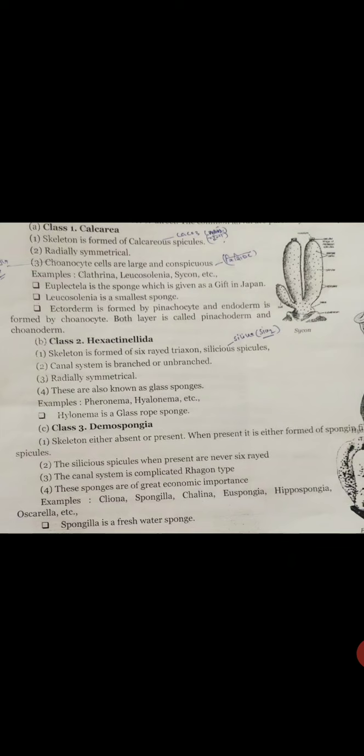Many are found in the deep sea. Moderate size glass sponges, though some reach 1 meter in length. These are marine and found in deep sea. Example: Hyalonema, also known as glass rope sponge.